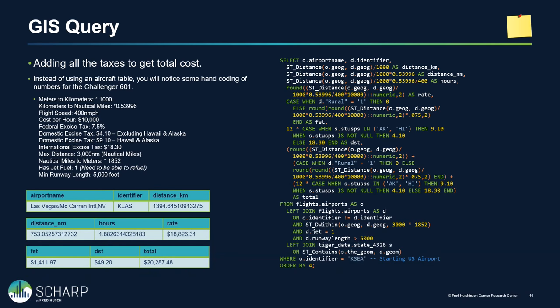Now we add the taxes — it gets more complex again, though it would be simpler with inner and outer queries so you can reference field names instead of repeating all the math. We look at whether it's a rural airport, whether it's Alaska or Hawaii, whether it's in a state or out of country, and figure out all the taxes. Down here we have our 7.5% federal excise tax, our domestic segment tax, and the international version — that's $49.20 for our 12 passengers.